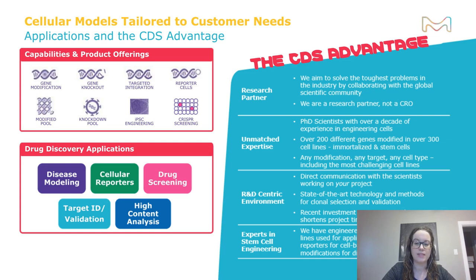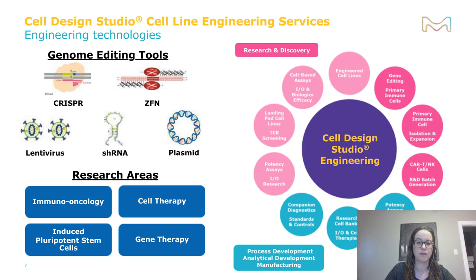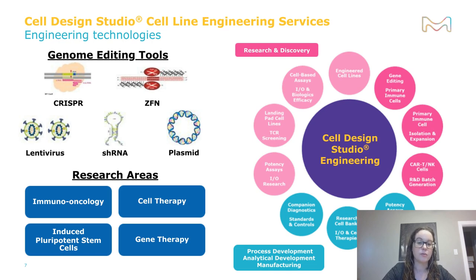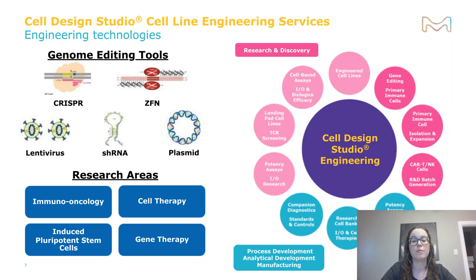We have engineered dozens of IPS cell lines for applications including lineage reporters for cell-based assays and SNP modifications for disease modeling. We primarily use CRISPR and zinc finger nucleases for all targeted gene editing projects. We also use short hairpin RNAs for projects in which modification of that locus is predicted to be lethal or have a significant growth defect. For projects that do not require targeted methods, we often use lentivirus or plasmid delivery. Our research areas range from cell therapy and gene therapy to immuno-oncology and induced pluripotent stem cells, in both the research and discovery space as well as downstream applications including process development, analytical development, and manufacturing.